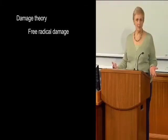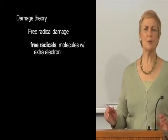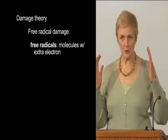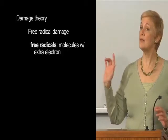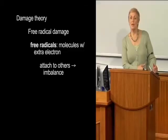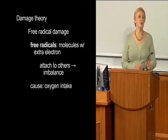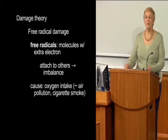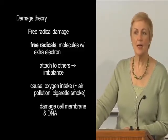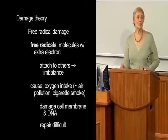A second theory of aging — and this is a damage theory — states that our cells accumulate free radical damage with the passage of time. What are free radicals? They're molecules in our body that have an extra electron. In normal molecules, electrons are paired so that their electrical energies are balanced, but free radicals have an extra negative charge, causing them to attach to other molecules and create an imbalance. They're caused by environmental factors such as oxygen intake, air pollution, and cigarette smoke. Not only do they damage a cell's membrane and DNA, but they also make it more difficult for cells to repair the damage, which in turn causes aging to accelerate.